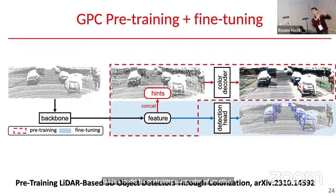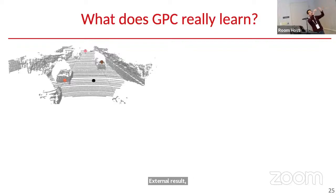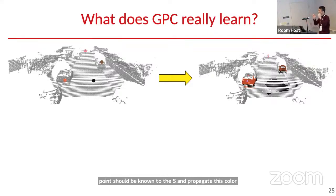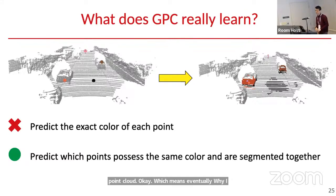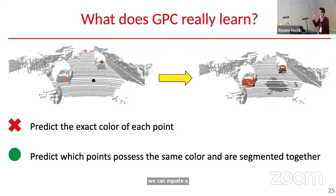The red part is pre-training and the blue part is fine-tuning. To verify what the algorithm learns: I give a point cloud with randomly assigned colors — not the true colors — and run our algorithm. It can correctly identify which points belong to the same object and propagate the color, even with arbitrary input colors. This means we don't need to predict the exact color — we only need to predict which points should be segmented and colored together. If we can do this, the backbone knows where the objects are, and just needs to create a bounding box for each.